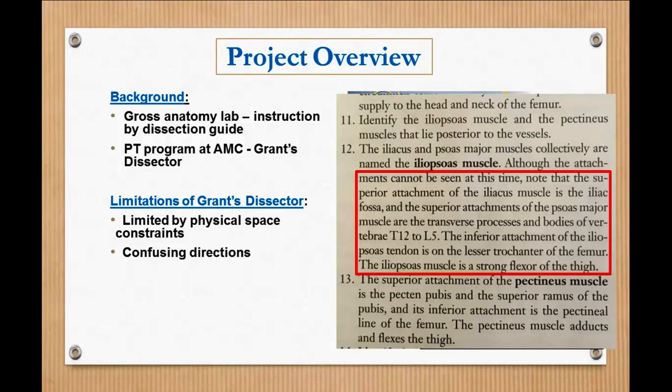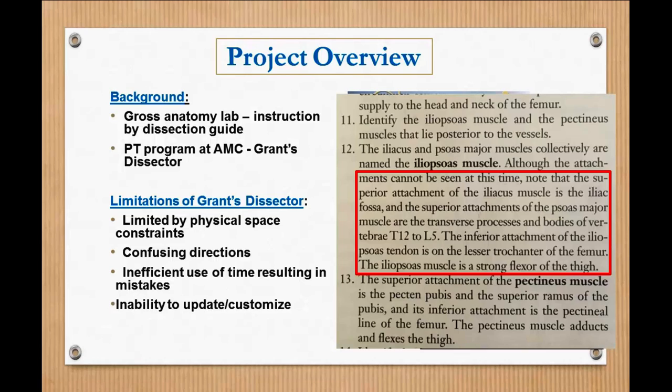This is just highlighting a portion of the text. You can see how long it is. They added all this information in the red box about the muscle attachments, which is helpful to know, but not necessarily when you're finding directions for cutting. So a lot of this can lead to inefficient use of time in the lab, confusion, mistakes, and frustration. Also another limitation is you can't really update or customize because it's already printed, so you can't change it to the order that fits your program.